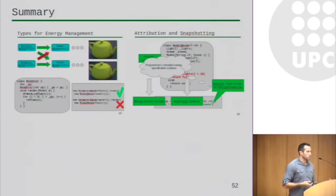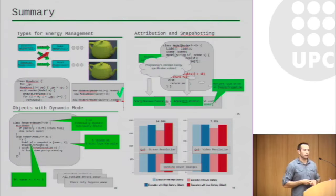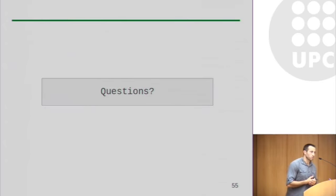So we've talked about the types for energy management and consistent communication of objects with respect to energy. These new abstractions, attribution, and snapshotting. How we mix these two disciplines is static and dynamic typing. And I've showed how we evaluated our system for battery and temperature aware programming. And with that, I will take questions.